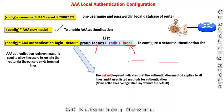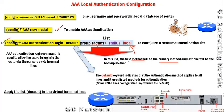So we enabled AAA authentication, then configured a list specifying where the user database will be accessed for authentication. Next, we need to apply this list to a particular port, interface, or VTY lines. The router has different ports such as the console port and VTY lines, which are virtual lines.